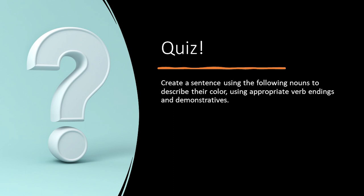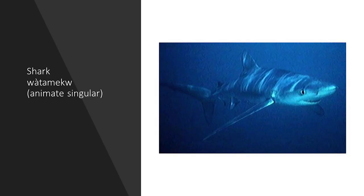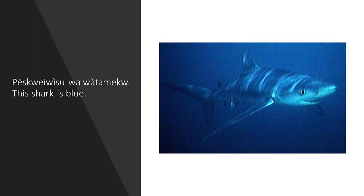Now we'll have a quiz. Create a sentence using the following nouns to describe their color using the appropriate verb endings and demonstratives. Shark: watamek. Create a sentence stating: This shark is blue. Answer: pasqueyuvasuwa watamek — this shark is blue.